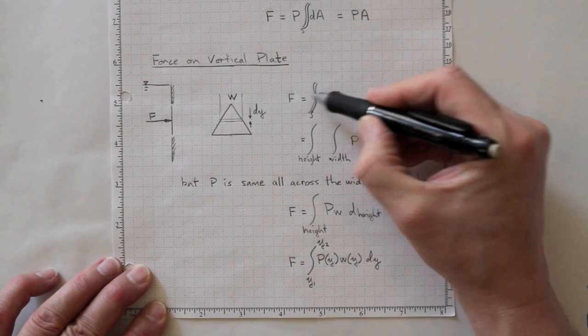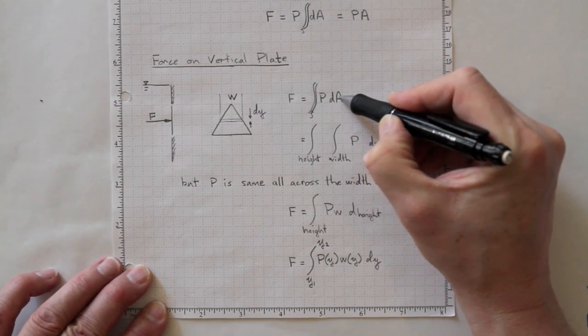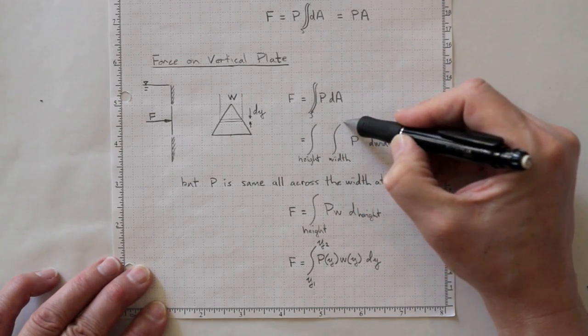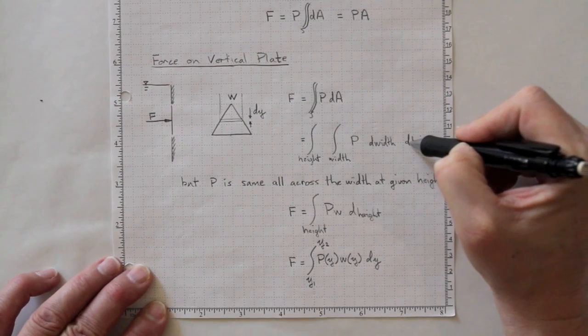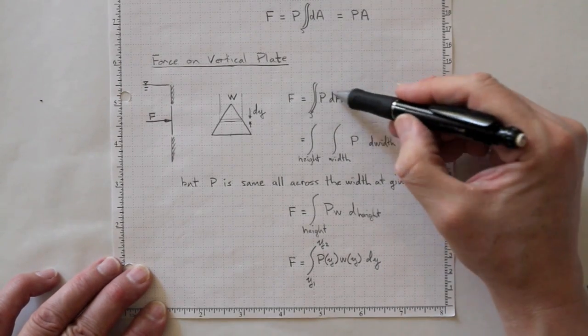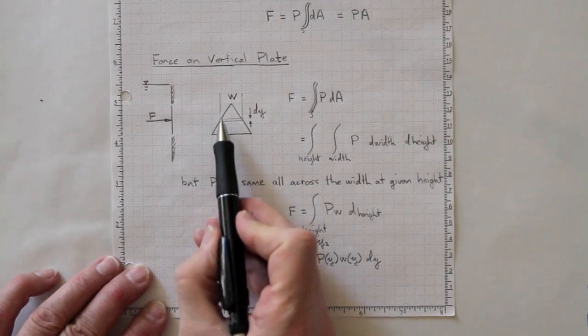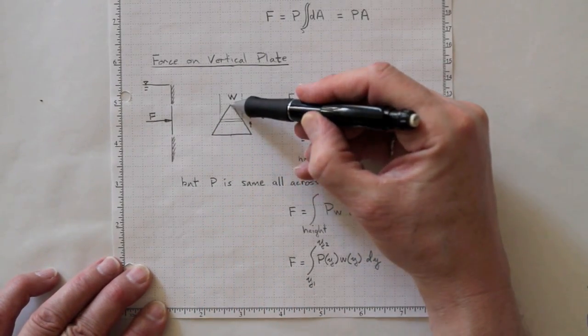So the force will be equal to the integral over the surface of the pressure times the area. Integral over the height, integral over the width, P d width times d height is the way we can break this down into two sequential integrals. So we're going to integrate from there to there, and then we're going to integrate from there up to there.